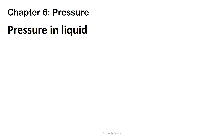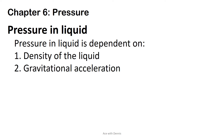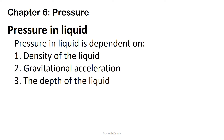Pressure in liquid. Pressure in liquid is dependent on: 1. Density of the liquid. 2. Gravitational acceleration. 3. The depth of the liquid. Its formula is P equals rho times g times h.